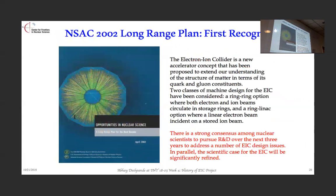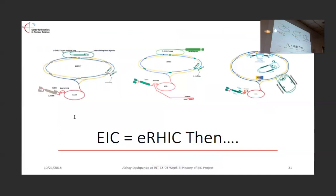In the long-range plan, the results were optimistic. A new accelerator concept was proposed to extend our understanding of the structure of matter in terms of quarks and gluons. Two classes of machines were proposed: the LINAC-ring and the ring-ring design. There was consensus among nuclear scientists to pursue R&D over the next few years to see the real potential for the science as well as the machine. Those were the two designs — one could call one the New Jersey LINAC and the other the Connecticut LINAC.